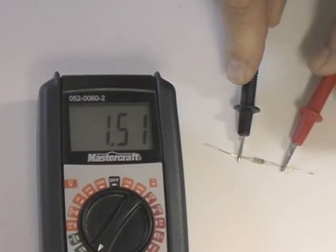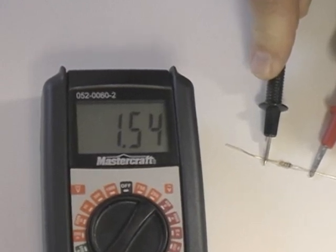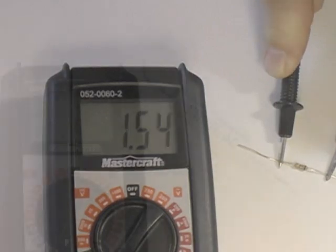This is a 1500 ohm resistor. The meter is indicating 1.54K, or 1540 ohms, again within the tolerance range.